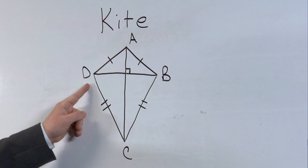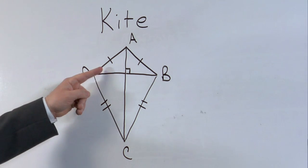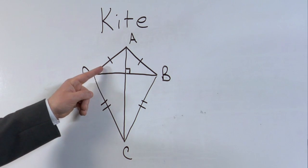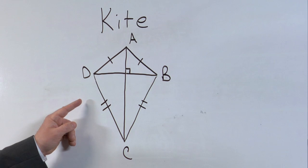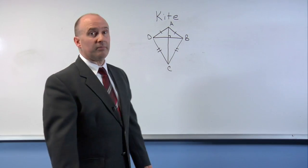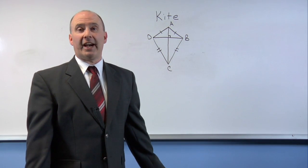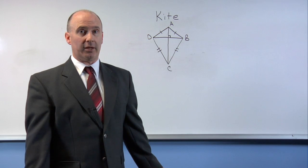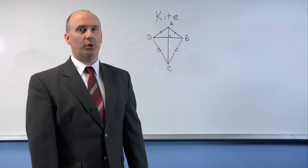If we look carefully at these two angles, they don't appear to be of the same size, and in fact they're not. So therefore, the diagonals of a kite do not bisect both angles. They only bisect two of the four angles.